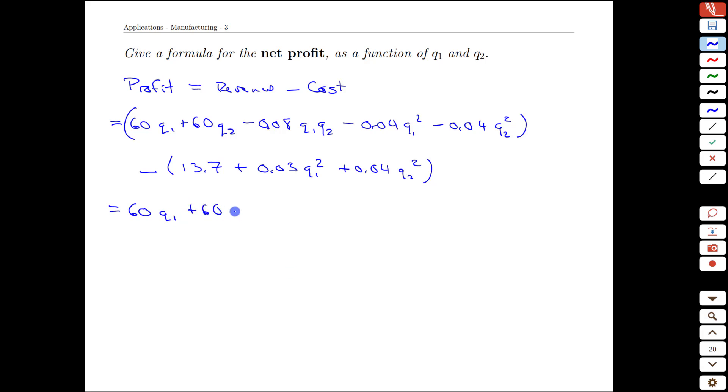We can then merge some of the terms. The q1 and q2 terms, the q1 and q2s we can't do anything with. There's only one of each of those. The mixed term will also stay the same. But we do have negative 0.04 q1 squared minus another 0.03 of those, which will give us negative 0.07 q1 squareds. And in a similar calculation, we'll have negative 0.08 q2 squareds and 13.7 at the very end.